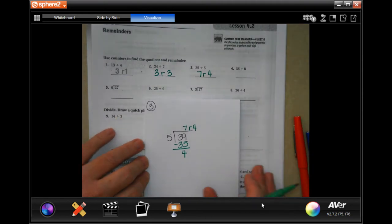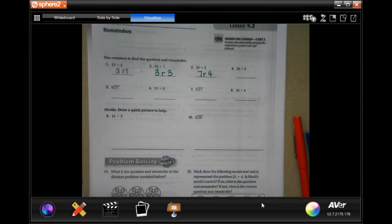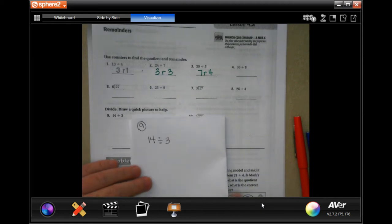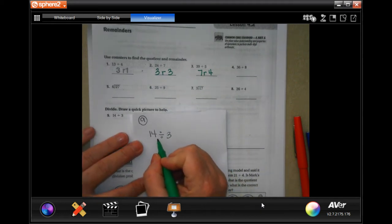You guys are gonna do four through eight. You totally can. I'm gonna help you guys on number nine just so you can see what it is that they're talking about. Okay, so they're talking about you have fourteen, you split it up between three, so you're gonna make three circles.